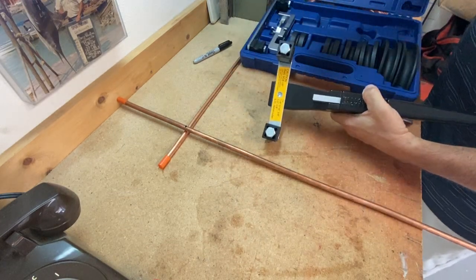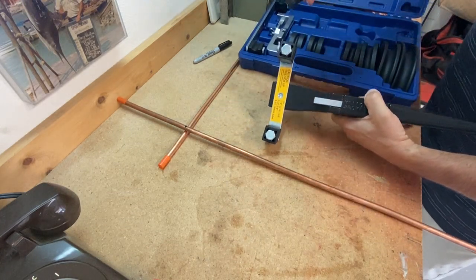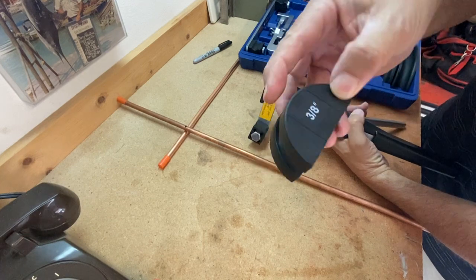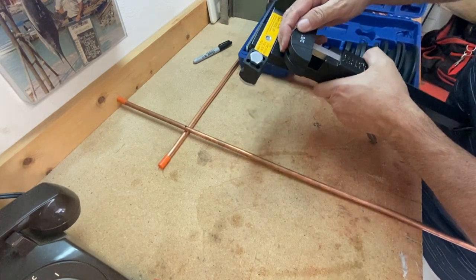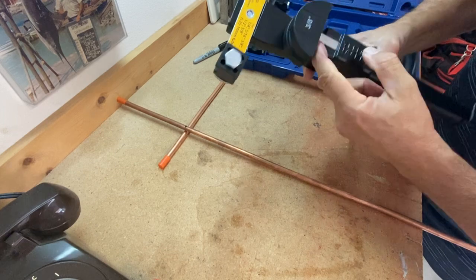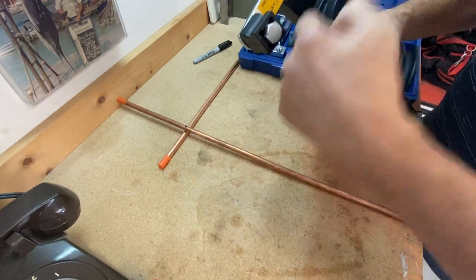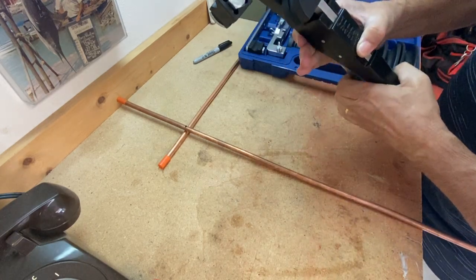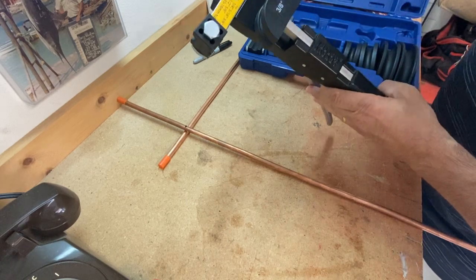We get the three-eighths mandrel that is used to do the bending. Fits right down on that square peg. I put my tubing in here and as I ratchet this up, it will bend my tubing.